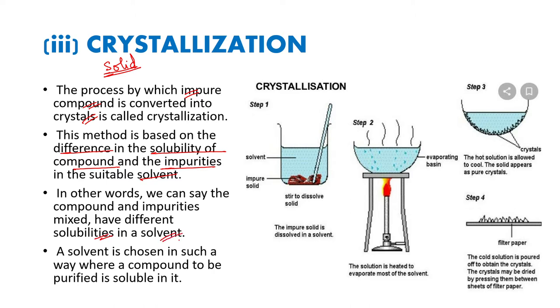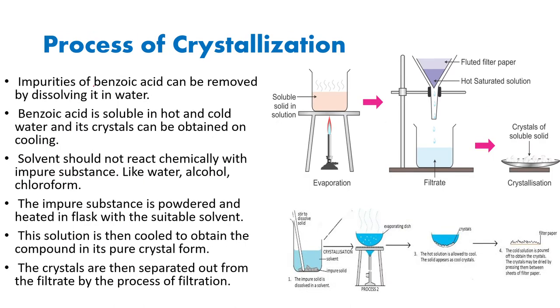Let's take an example of benzoic acid. We want to remove its impurities by this process. First, we will make a solution of benzoic acid with a solvent, and then we will heat it to get a saturated solution.